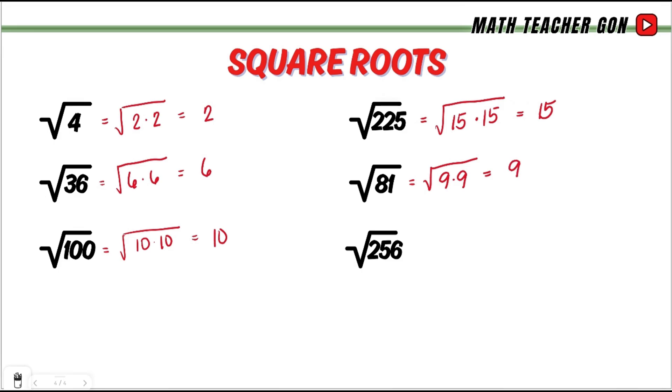How about the square root of 256? I want you to write this on the comment section. Perfect squares and square roots are connected. They are like best friends in math. When you understand one, you can easily find the other.